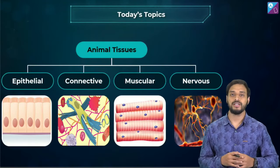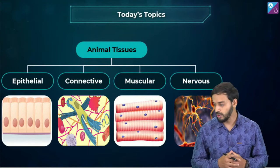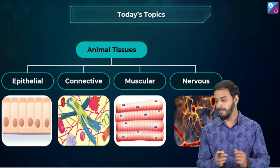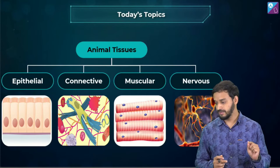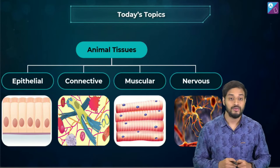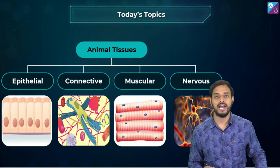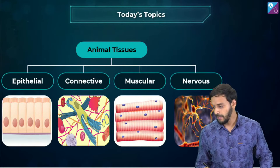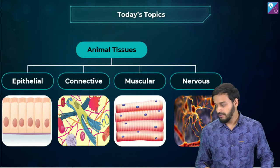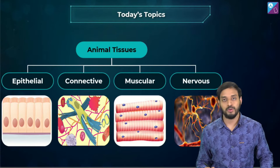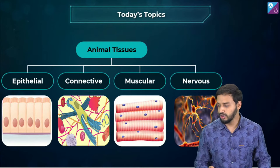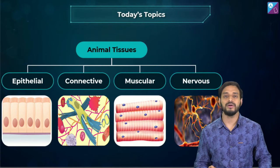The topics we are going to cover today are animal tissues — epithelial, connective, muscular, and nervous tissues. All of you ready with your pen, paper, and water?